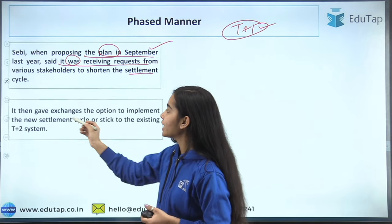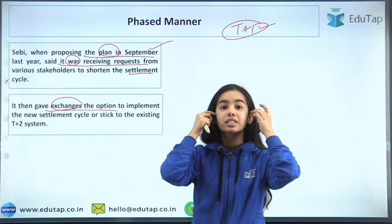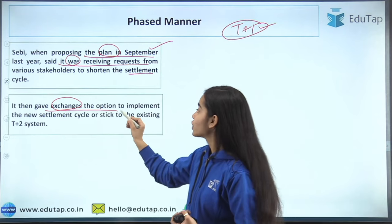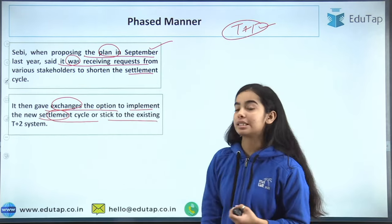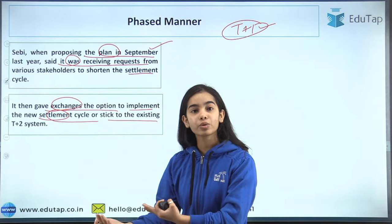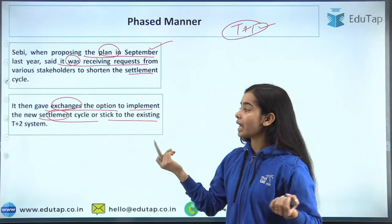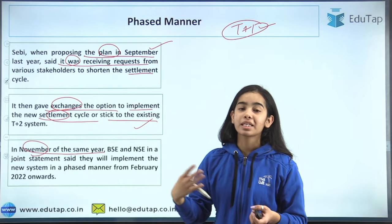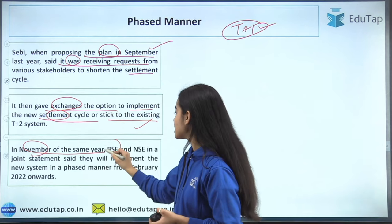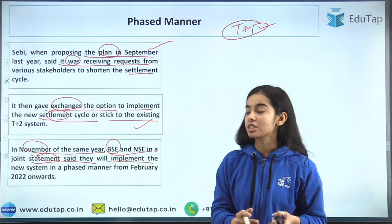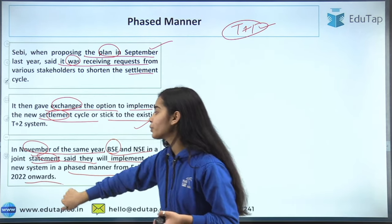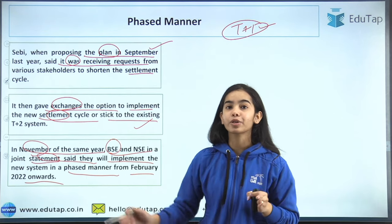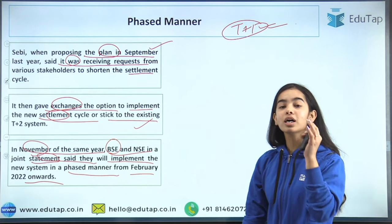SEBI proposed the plan in September and gave the exchanges the option to implement the new settlement cycle or stick to the existing T plus two system — it was not mandatory. Then in November of the same year, BSE and NSE in a joint statement said they will implement the new system in a phased manner from February 2022 onwards. On the last Friday of February, the process started to bring the T plus one settlement system into the stock exchanges.